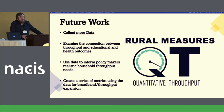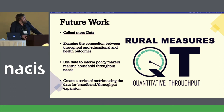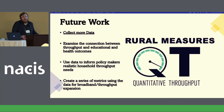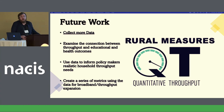Future work: this data is awesome — there's a lot you can do with it. I want to examine the connection between throughput and educational and health outcomes. There's a lot more policy that can be gleaned from this, as far as household throughput needs. You can reverse engineer and get household throughput usage — surveys have been done before but without looking at the objective numbers. And we want to create a series of metrics to look at broadband and throughput expansion: where would be the most bang for our buck?